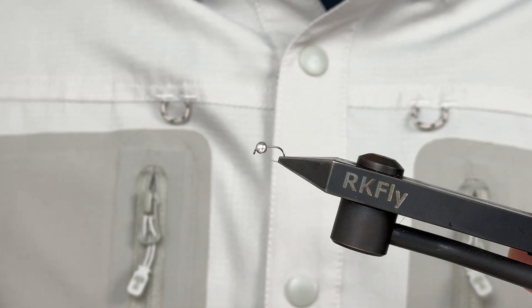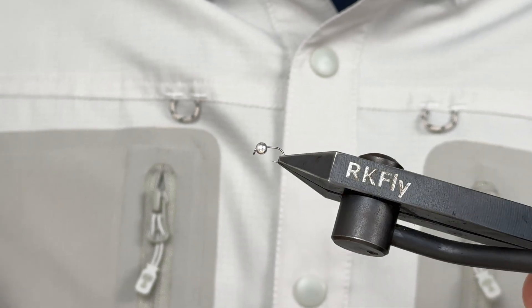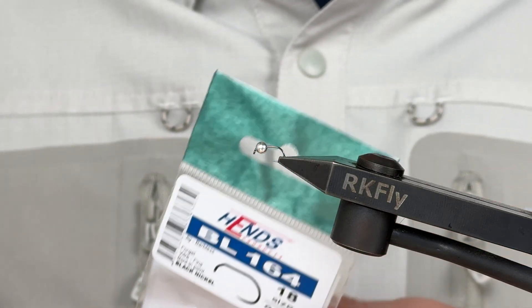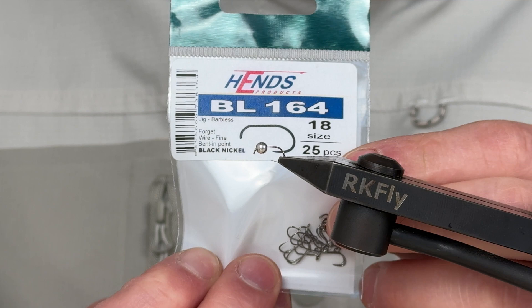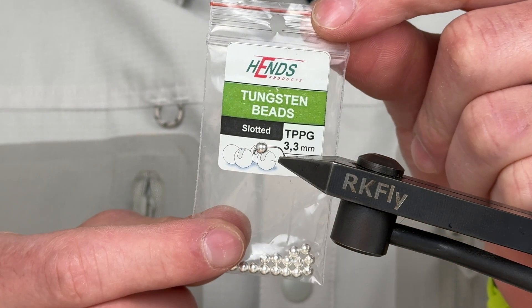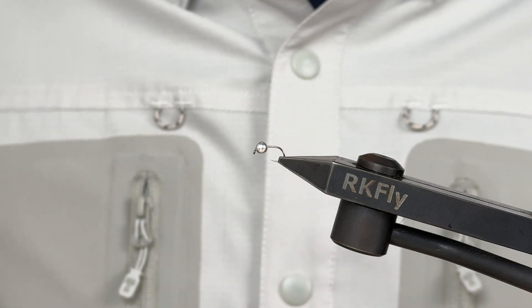Hello! Today I will show you how to tie a Peacock Pertigone Nymph. For this fly pattern, I'm using a Hens BL-164 size 18 hook. On this hook, I have threaded a silver tungsten bead with a diameter of 3.3 mm.